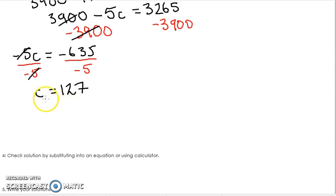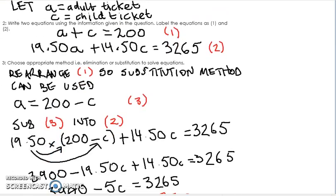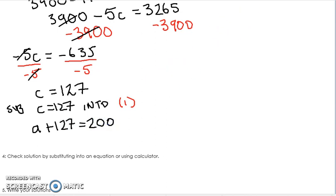So far, what we can decipher is that the amount of children's tickets that we sold was 127. Now, I'm going to substitute C equals 127 into this formula here. A plus C is equal to 200 because that was in the first part of the question. I'm going to substitute C equals 127 into equation 1. And what will happen is we'll have A plus 127 is equal to 200. Take away 127 from both sides, and our A value can be equal to 73.